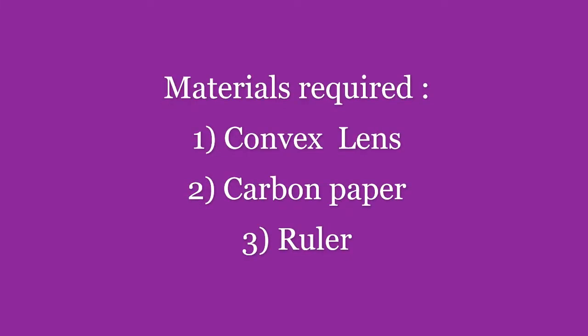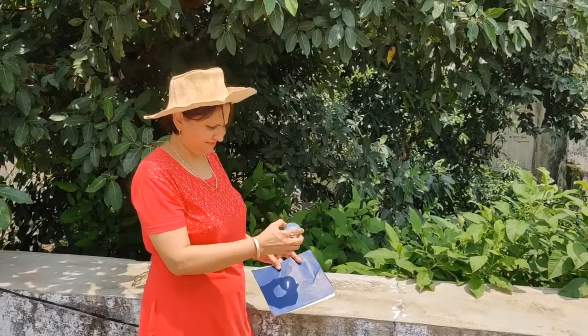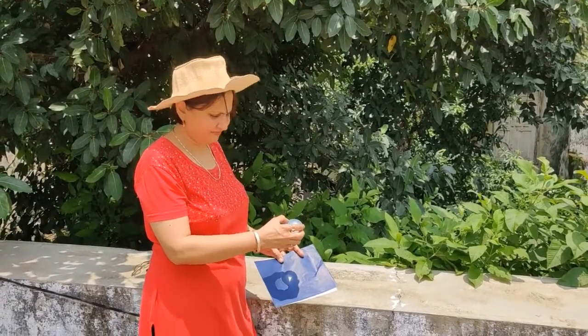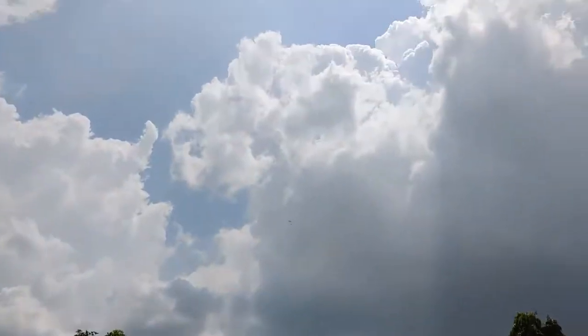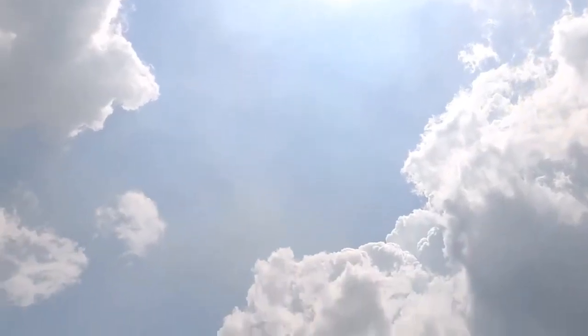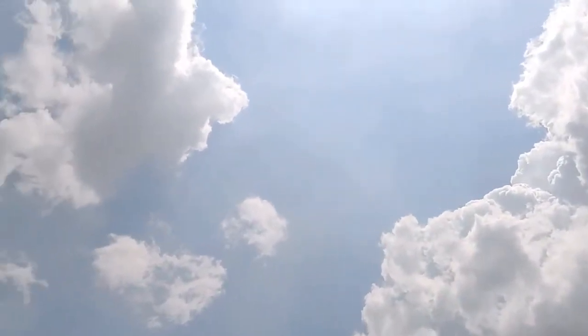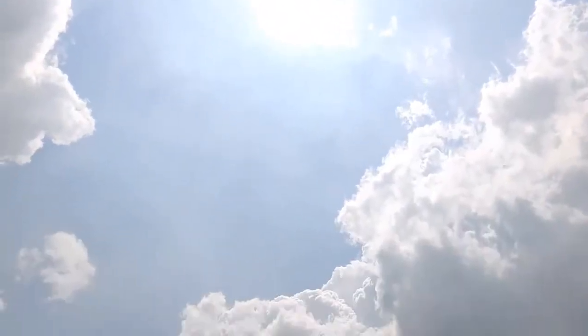Let us perform an activity to bring a bright spot of the sun on the carbon paper by using a convex lens. As you can see, though it is cloudy, but still the sun rays could be concentrated and a sharp image of the sun could be seen on the paper.